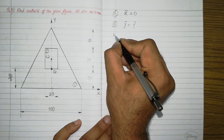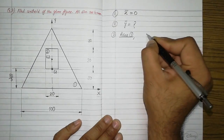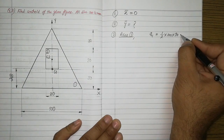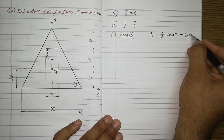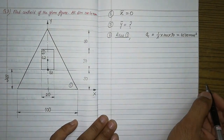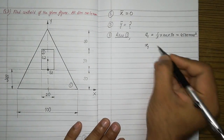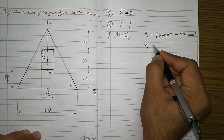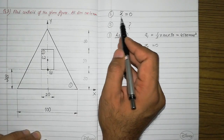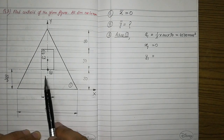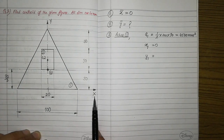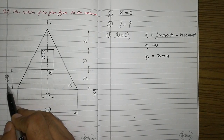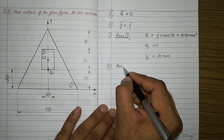To get y-bar we need some calculations. For area one, the triangular area: A1 = (1/2) × base × altitude = (1/2) × 100 × 90 = 4500 mm². x1 is the distance of centroid G1 from the y-axis — it is already on the y-axis, so x1 = 0. y1 is the distance of centroid G1 from the x-axis, which is 30 (that is h/3 = 90/3 = 30).